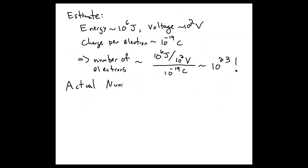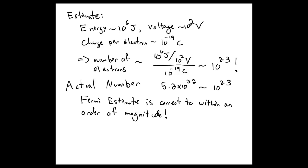The actual number, if you use about 45 watts of dissipated power for a typical MacBook Air, is 5.2 times 10 to the 22 electrons. And if you round that up, you get something like 10 to the 23. And so again, we see that the Fermi estimate gives us something that's pretty close to the actual value within order of magnitude. And that's the value of doing Fermi problems and Fermi estimates.